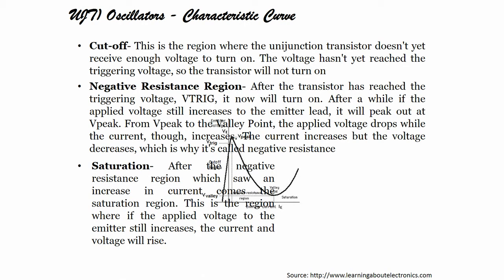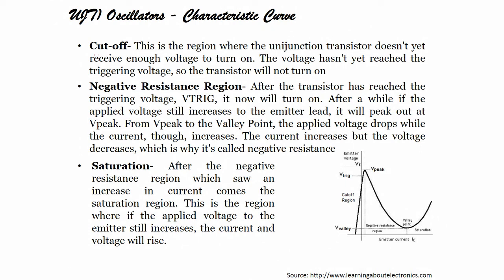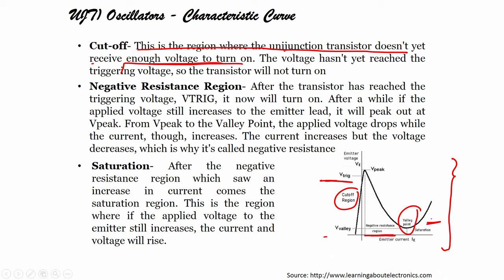Now, the cutoff region: this is the region where the unijunction transistor does not yet receive enough voltage to turn on — the voltage has not yet reached the triggering voltage, so the transistor will not turn on. Looking at the emitter voltage versus emitter current graph, you can see the trigger region, peak voltage, cutoff region, negative resistance region, valley point, and saturation region.